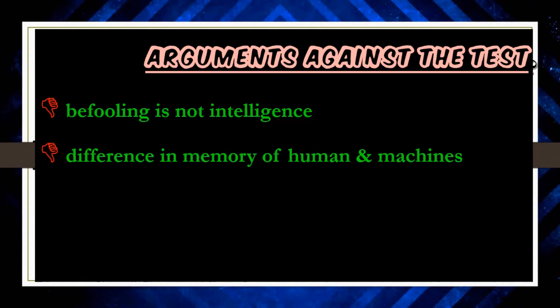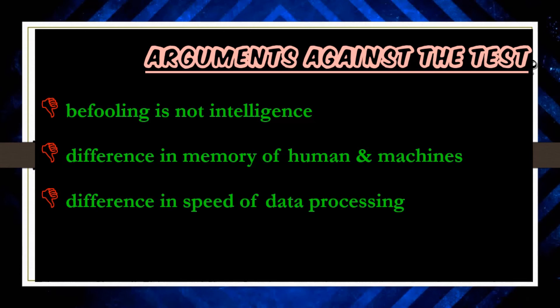The way we process information and make decisions is totally different from how computers do it — computers process data much faster than human beings. No consideration is given to memory capacity or speed of processing in Alan Turing's test. Because of all these arguments, the test is criticized by many researchers and scholars. In spite of that, this test is still used today. A recent example is from 2016, where a chatbot named Eugene Gustman was declared artificially intelligent after passing Alan Turing's imitation game.